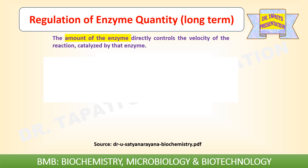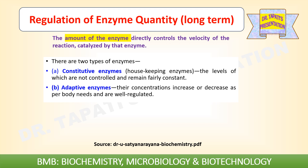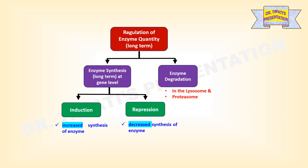The amount of an enzyme directly controls the velocity of the reaction catalyzed by that enzyme. There are two types of enzymes: constitutive enzymes (housekeeping enzymes), whose levels are not controlled and remain fairly constant, and adaptive enzymes, whose concentrations increase or decrease as per body needs and are well regulated. Most enzymes, particularly the rate-limiting ones, are present in very low concentration and have short half-lives, which helps in their efficient regulation.